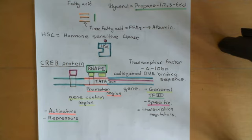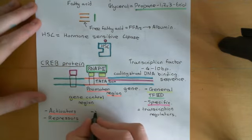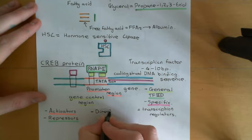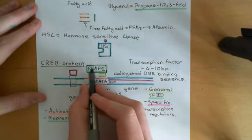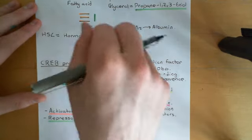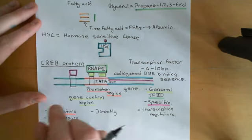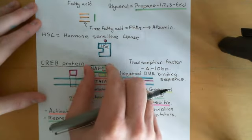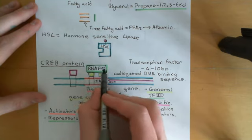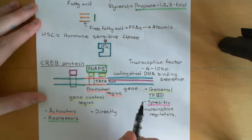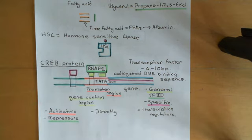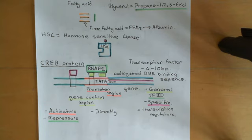There are two ways specific transcription factors do this. One is quite directly: since the DNA can fold back around, the specific transcription factor can be very close to the RNA polymerase 2 assembling on the promoter region and directly interact with it, either increasing or decreasing the probability that it assembles there.